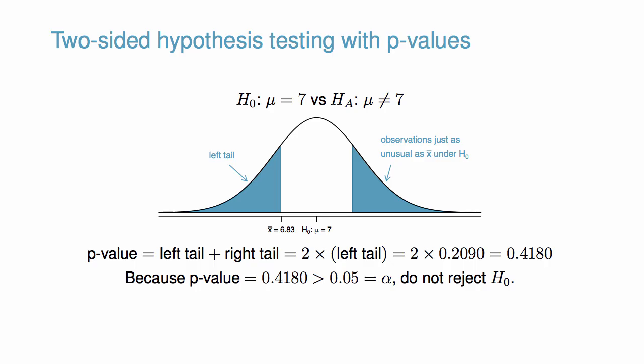This p-value is relatively large, and it is larger than the 0.05 significance level, so we should not reject the null hypothesis. That is, if the null hypothesis is true, it would not be very unusual to see a sample mean this far from 7 hours simply due to sampling variation. Thus, we do not have sufficient evidence to conclude that the true mean hours of sleep in this college is different than 7 hours.